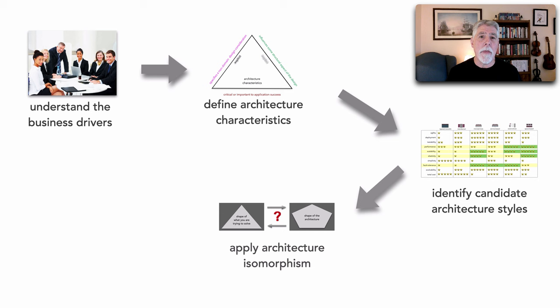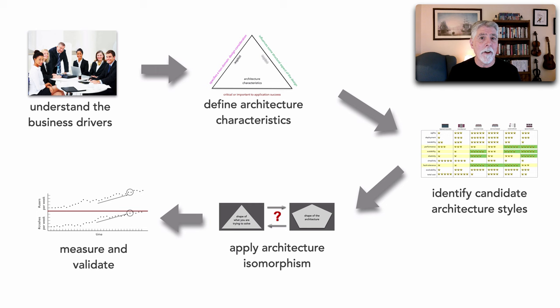That next step is to apply Domain to Architecture Isomorphism and from there continue to measure and validate, because business context and business needs do change, as well as the need for different characteristics and the shape of the problem domain.